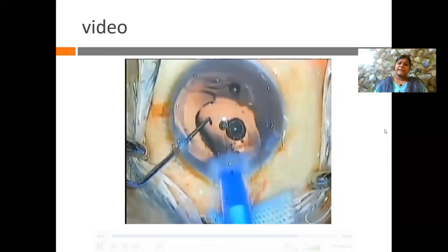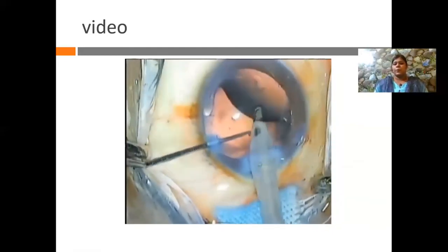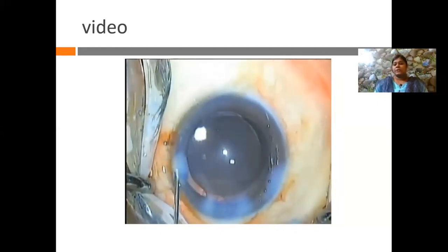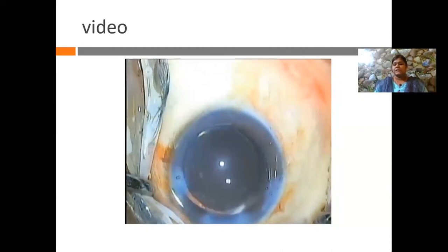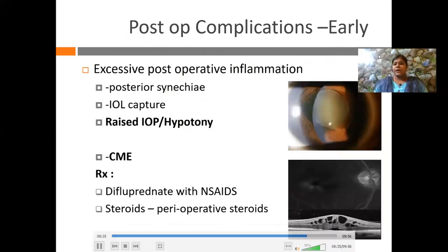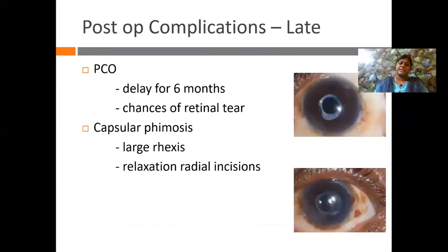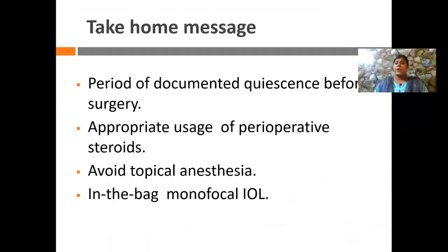Deepen your anterior chamber and place an in-the-bag IOL — in-the-bag IOL placement is the rule, because the haptic may irritate the iris if left in the sulcus and cause recurrent post-operative inflammation. Do proper PC polishing and anterior lens capsule polishing, and form your AC well. If needed, give subconjunctival Decadron. Look for early and late post-operative complications: excessive post-operative inflammation if not properly managed may lead to posterior synechiae, IOL capture, and increased or decreased IOP. These patients have a higher chance of cystoid macular edema. Late complications: PCO is very high in these patients but delay Nd:YAG cap for six months because the chance of retinal tear is again higher.